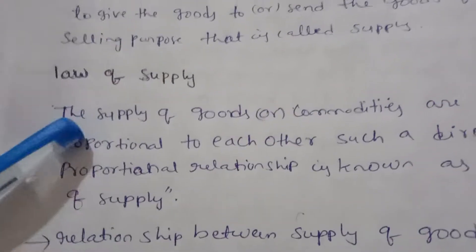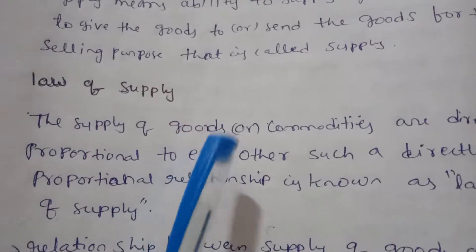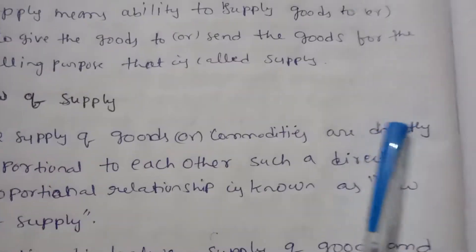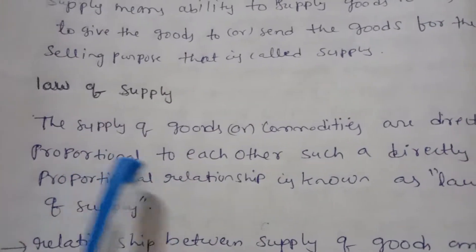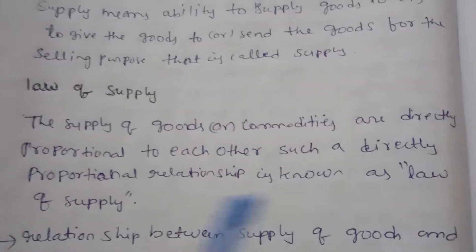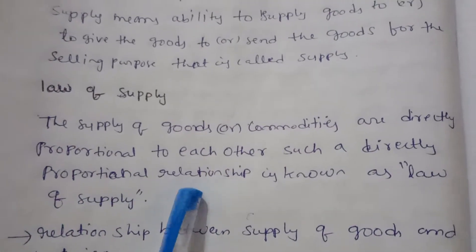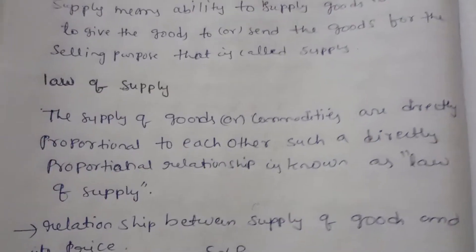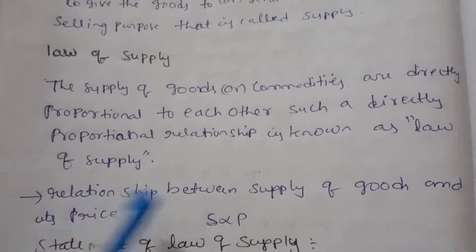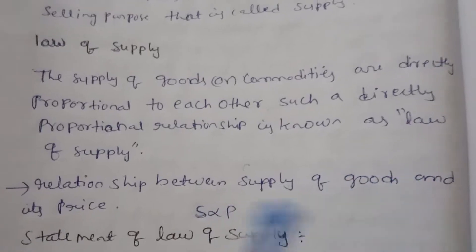Law of supply: the supply of goods or commodity and price are directly proportional to each other. Such a directly proportional relation is known as the law of supply. The law of supply is the relationship between supply of goods and price.